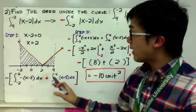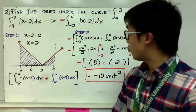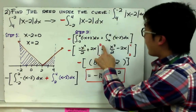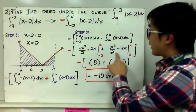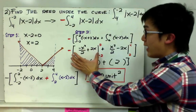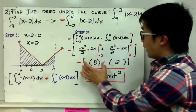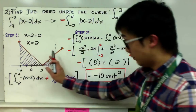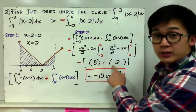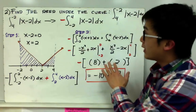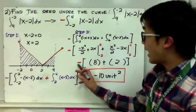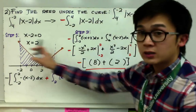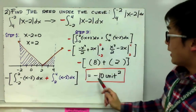Step two is applying the definite integral. The integral of the first function gives negative x squared over 2 plus 2x from negative 2 to 2, which evaluates to 8. The integral of x minus 2 dx from 2 to 4 gives x squared minus 2x, which evaluates to positive 2. Adding the two areas gives 10. However, because we used the property of switching lower and upper limits, our final answer carries a negative sign, giving negative 10 unit squared as the area under the curve.